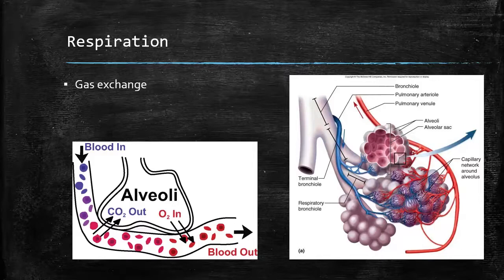Let's talk about gas exchange — what happens to the air once it gets into our lungs and over to the alveoli. Air goes into our trachea, that bifurcates into the bronchi, then down to the bronchioles, and ultimately down to the alveoli — the air-filled sacs — and that's where the gas exchange happens. Those alveoli are actually surrounded by a ton of capillaries, and these capillaries are what facilitate that gas exchange.